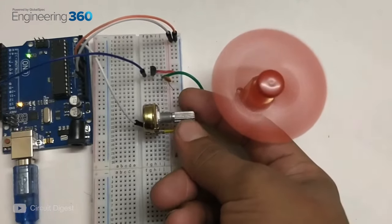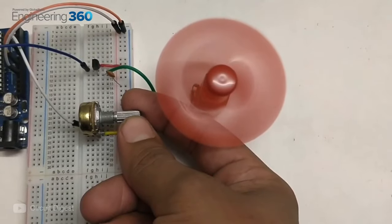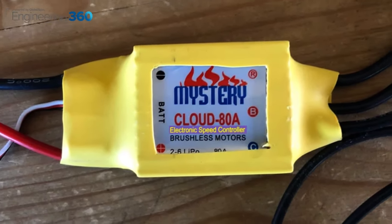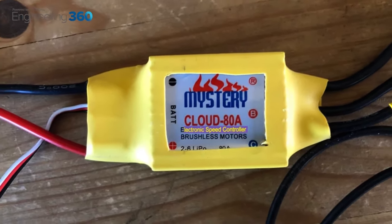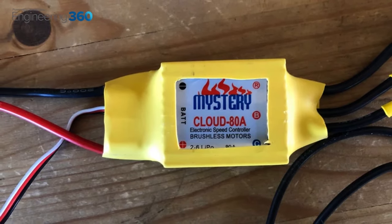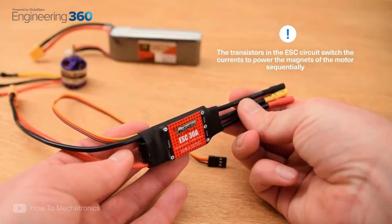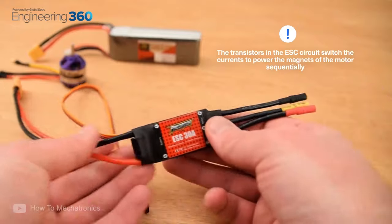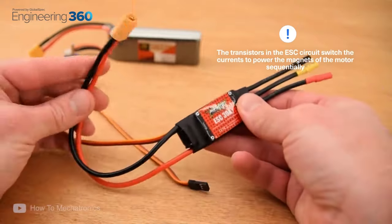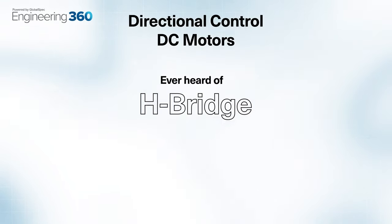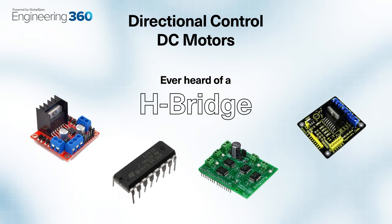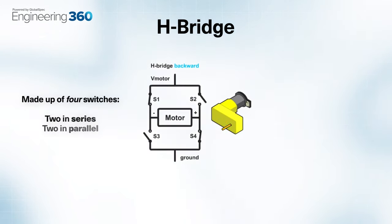Controlling the speed of a brushless motor would be slightly different and would require an additional component called an ESC, or electronic speed controller. This is due to the absence of brushes and requires transistors in order to switch the polarities to control the speed. For directional control, have you heard of an H-bridge? This handy little circuit is made up of four switches — two in series and two in parallel — with the load placed between the switches.